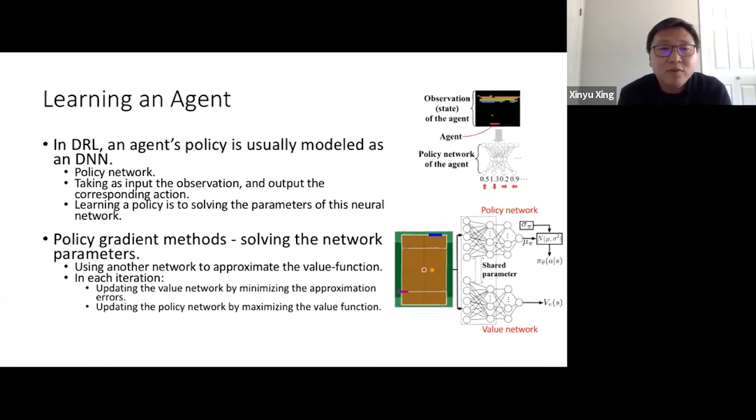In deep reinforcement learning, an agent policy is usually modeled as a deep neural network. This deep neural network is also called a policy network. The policy network takes as input the observation of the environment and outputs the corresponding actions.